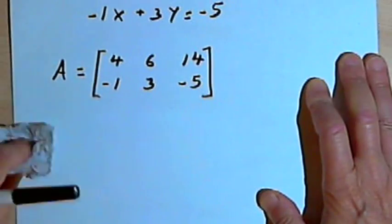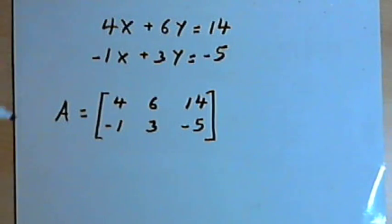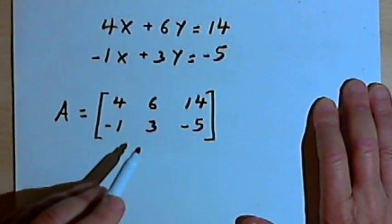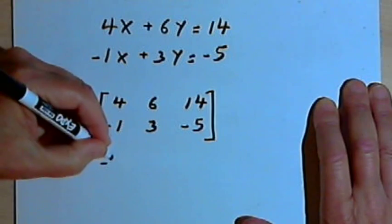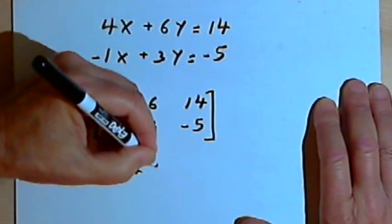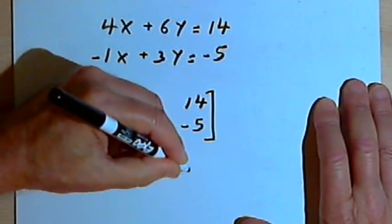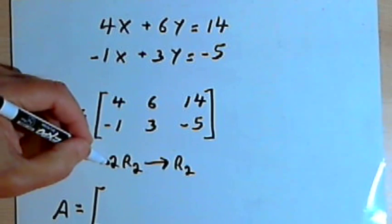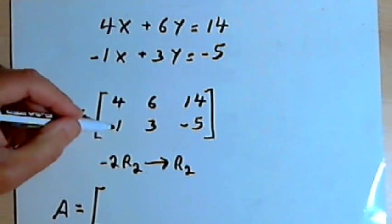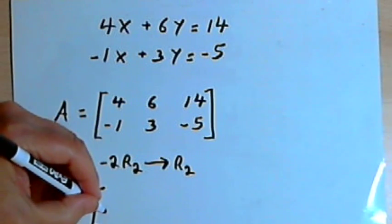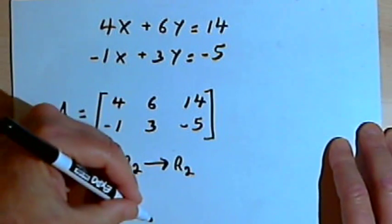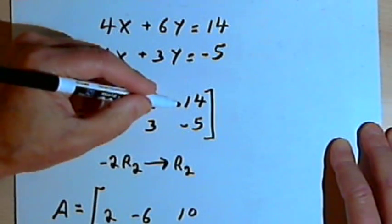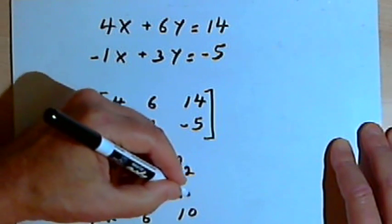It doesn't matter if you multiply by a positive number or a negative number. So looking at the system of equations again, I can multiply the second equation by negative 2. I'll do the same thing with the matrix: negative 2 times row 2 becomes the new row 2. Matrix A now becomes: negative 2 times negative 1 is 2, negative 2 times 3 is negative 6, and negative 2 times negative 5 is positive 10. Row 1 has not changed: still 4, 6, and 14.